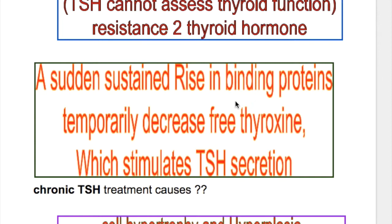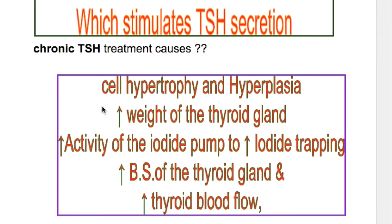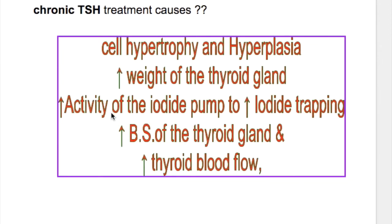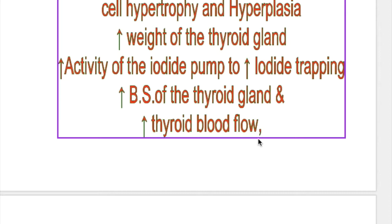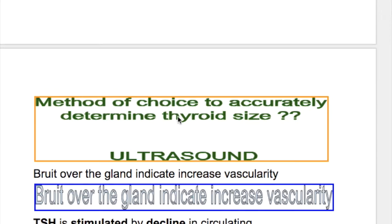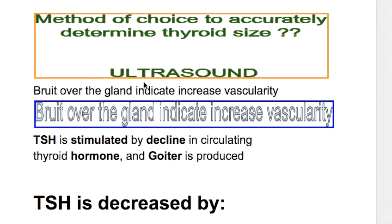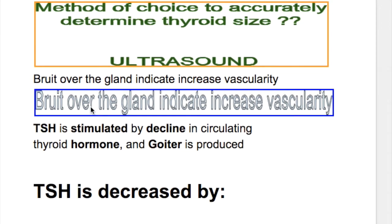A sudden sustained rise in binding proteins temporarily decreases free thyroxine, which stimulates TSH secretion. The effects of increased TSH include: cell hypertrophy and hyperplasia, increased weight of the thyroid gland, increased activity of the iodide pump to increase iodide trapping, increased blood supply and thyroid blood flow, and an overall increase in the size of the thyroid gland. Ultrasound is the method of choice to accurately determine thyroid size, and a bruit over the gland indicates increased vascularity.